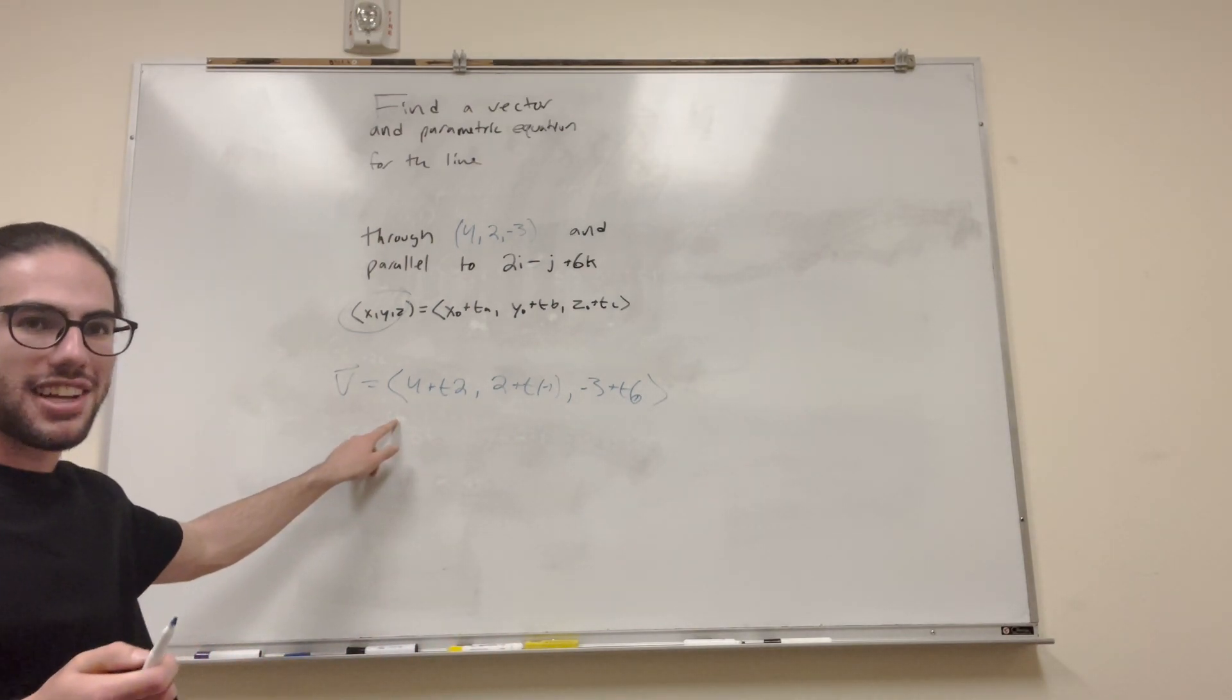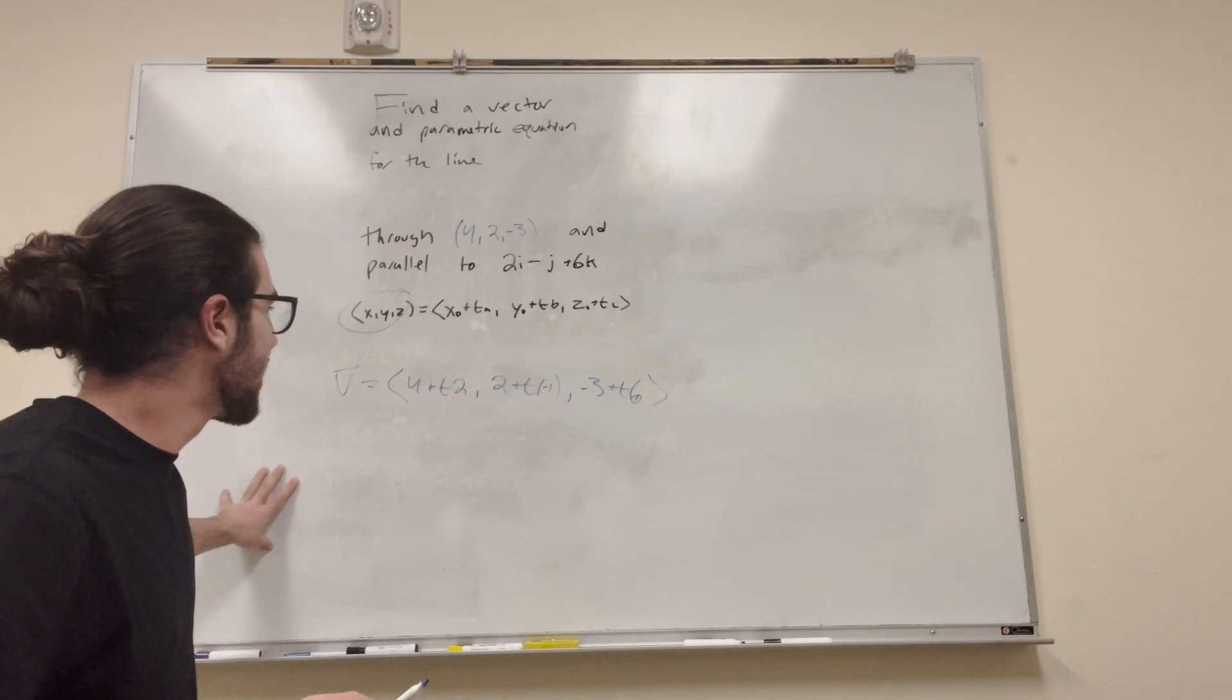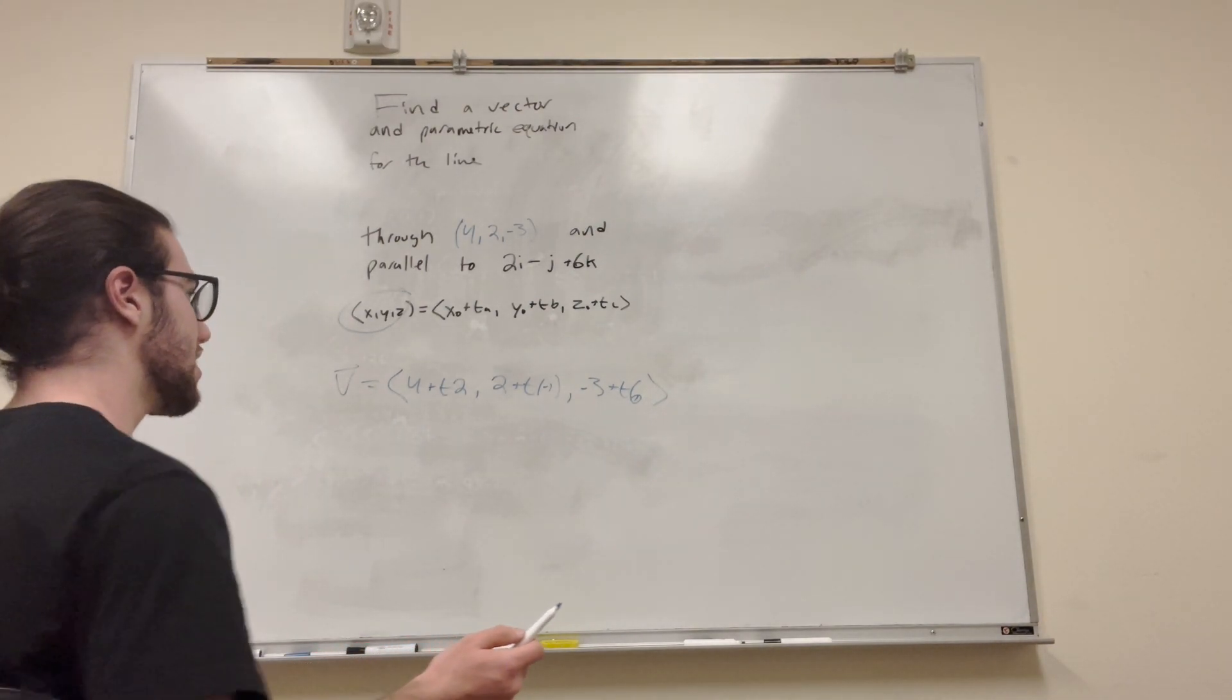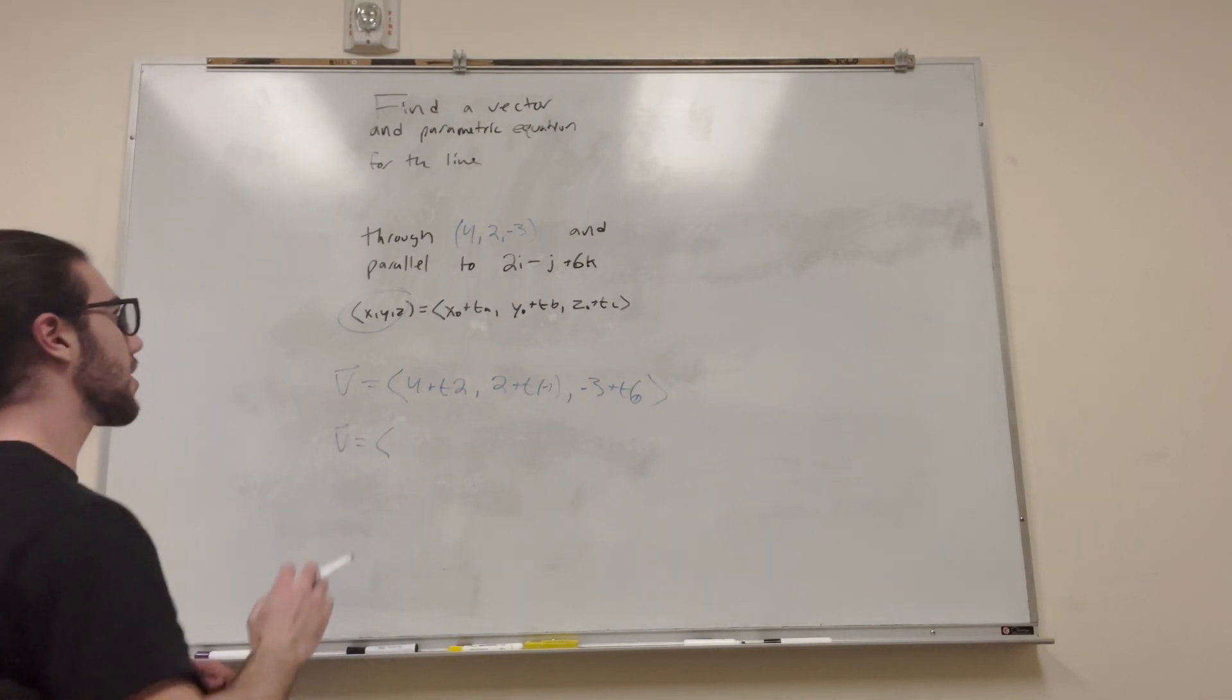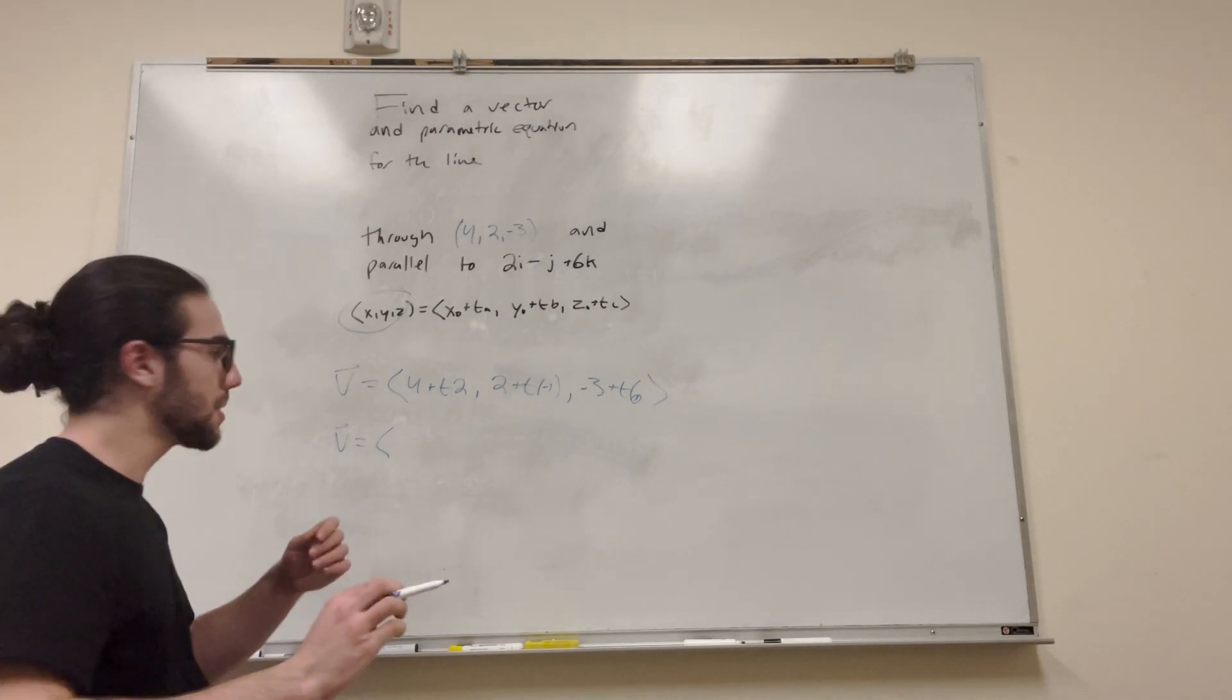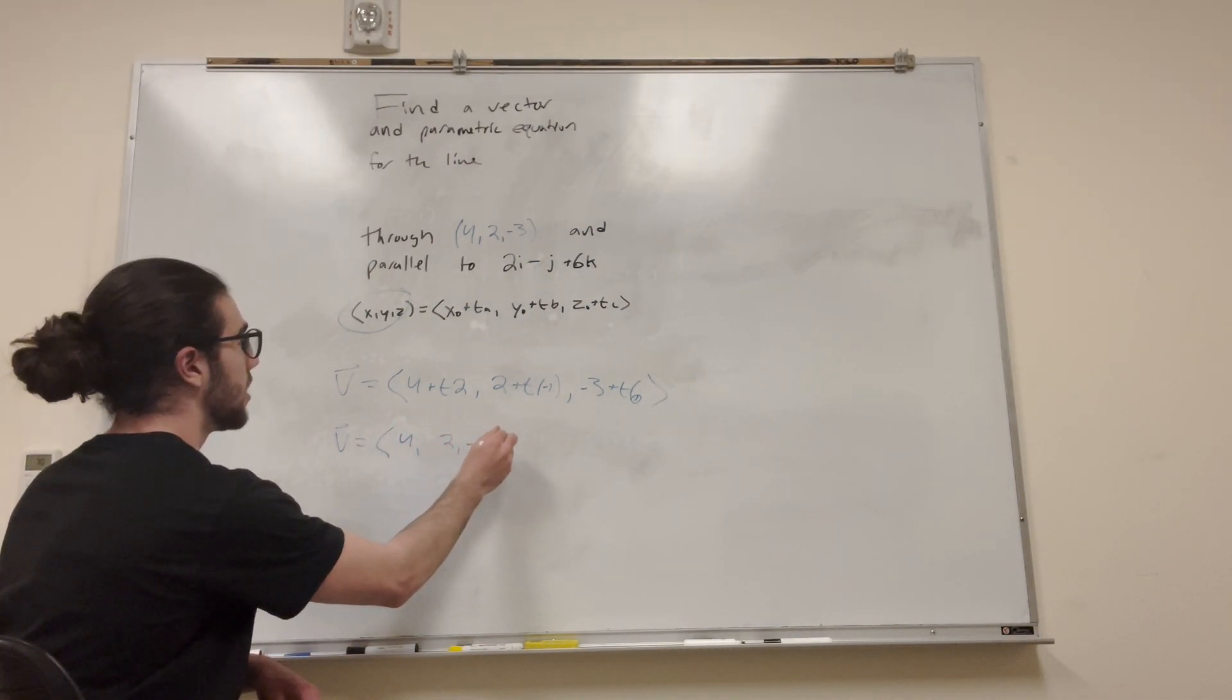All right, so this right here is not actually a vector or parametric form. This is just a general form, basically. But another form you can write this in is a vector form. So let's write it like this: Vector is equal to, bring out our constant, our original point X naught, Y naught, and Z naught. We're going to put that in its own vector. 4, 2, negative 3, same thing, goes to that point.